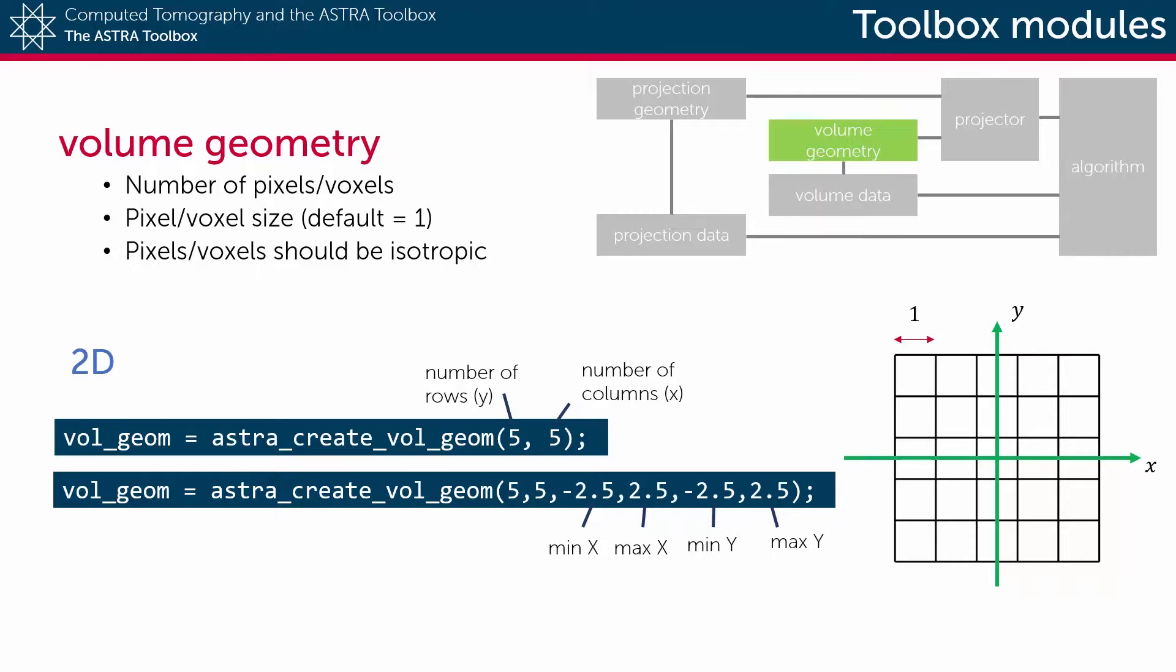In ASTRA 1.6, however, there is a limitation that each pixel has to be isotropic, which means that their width should equal their height.